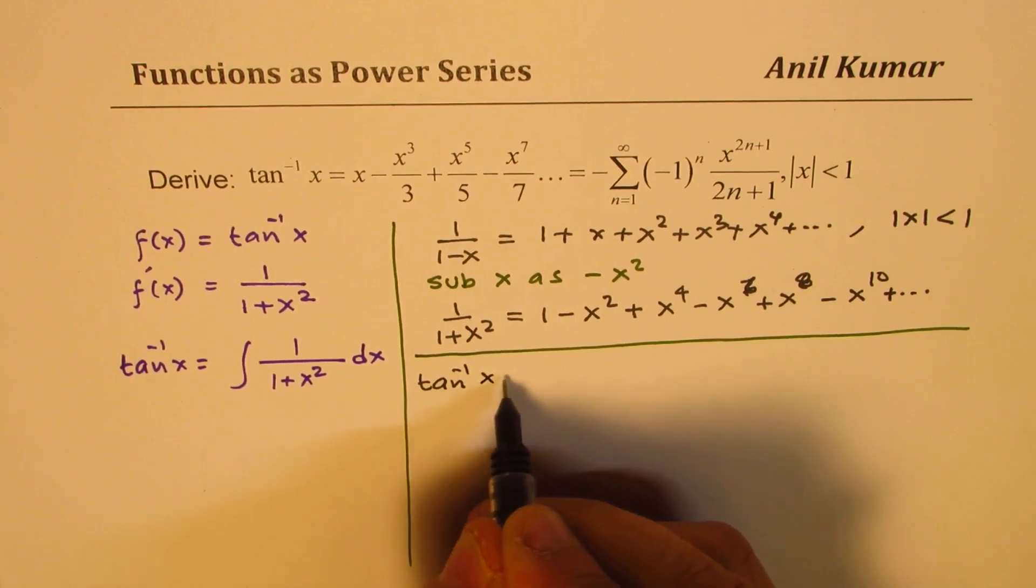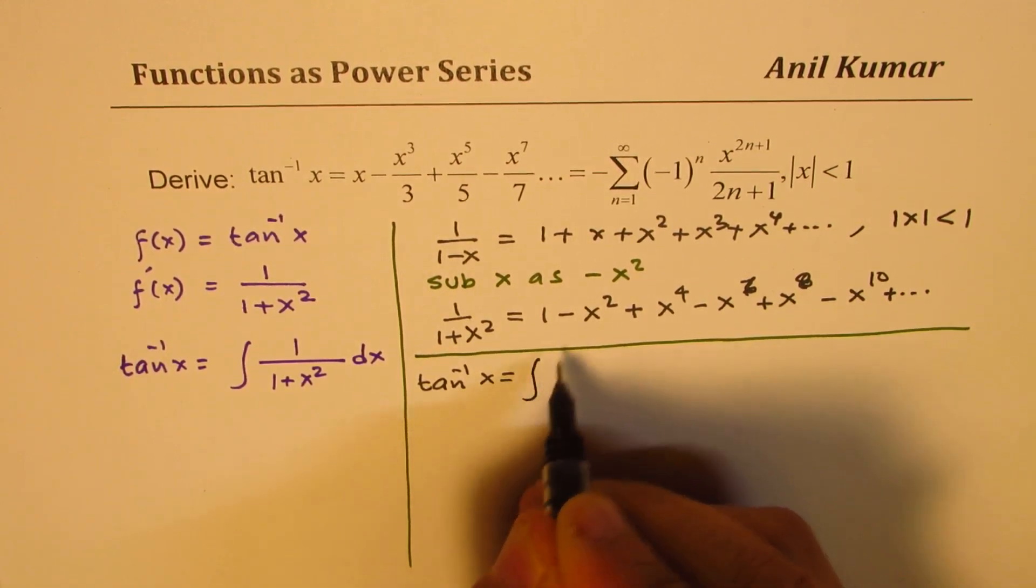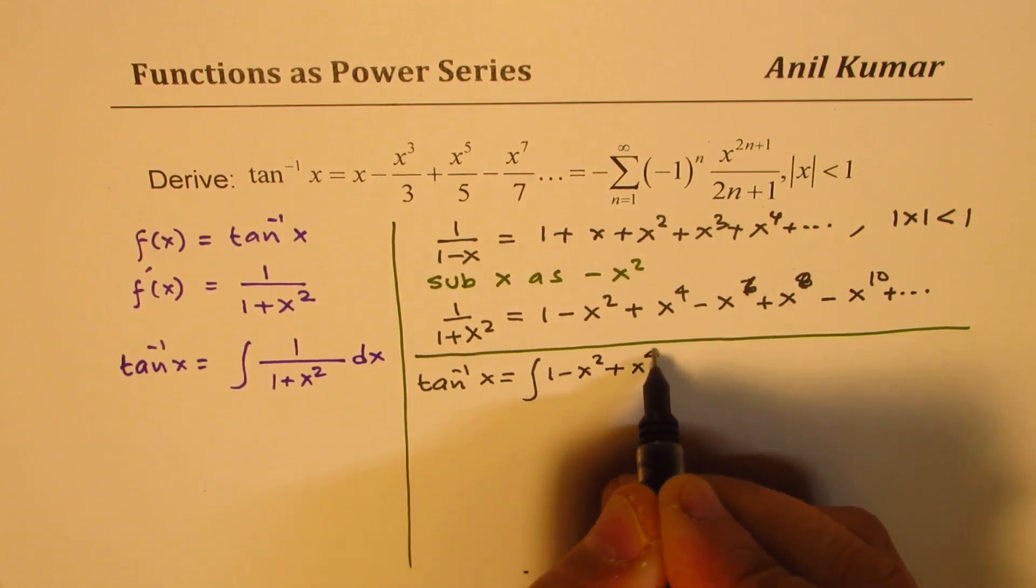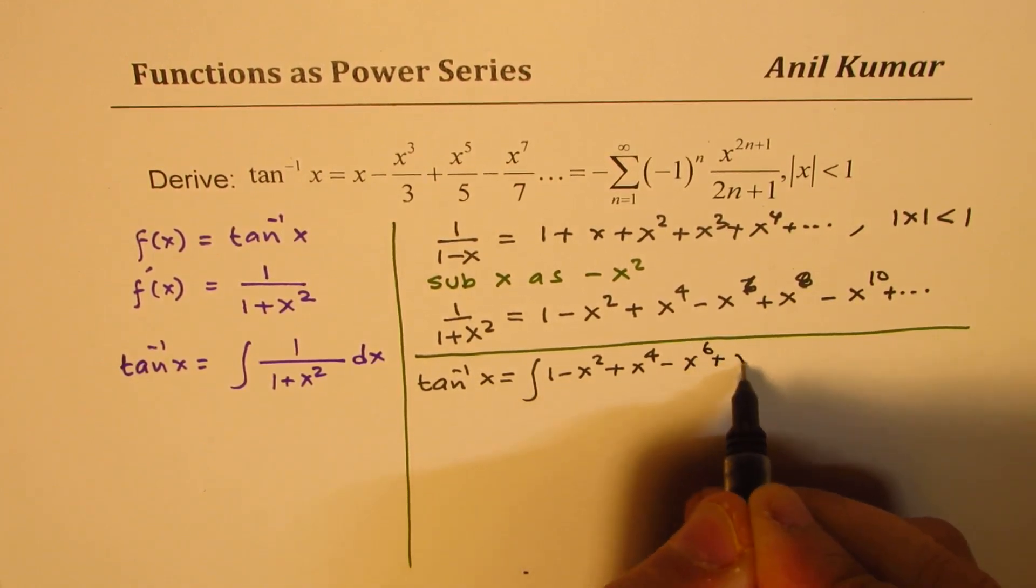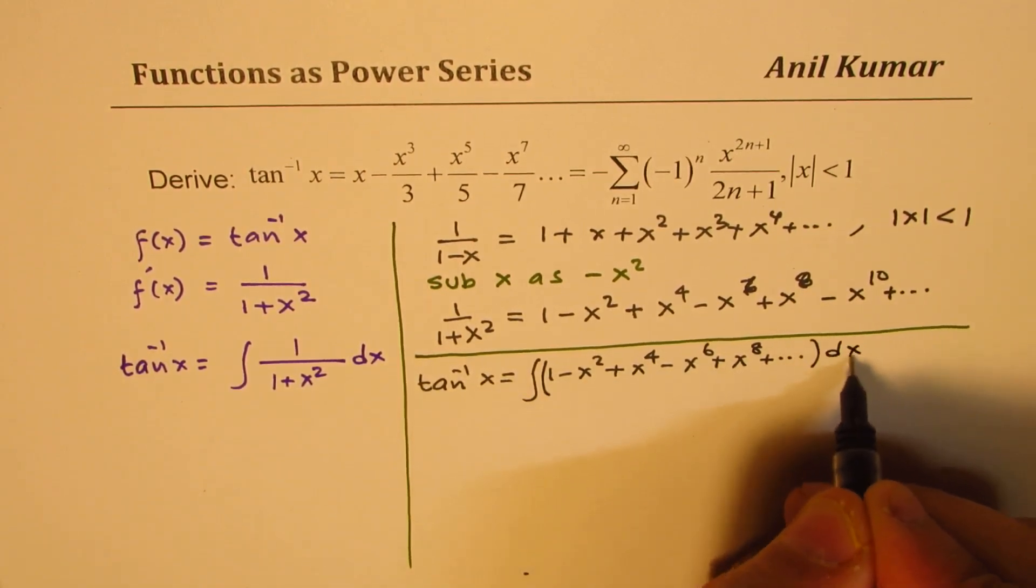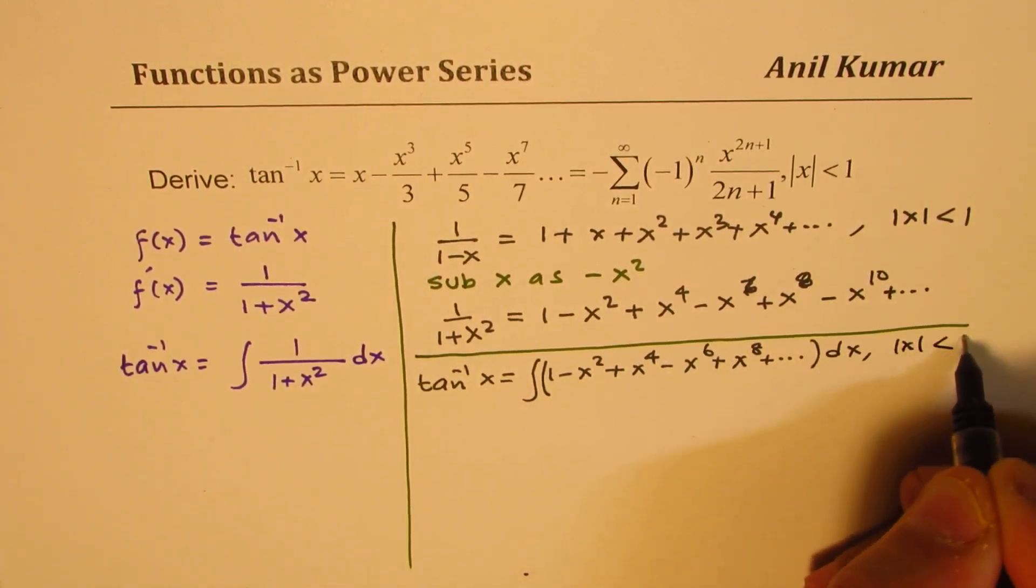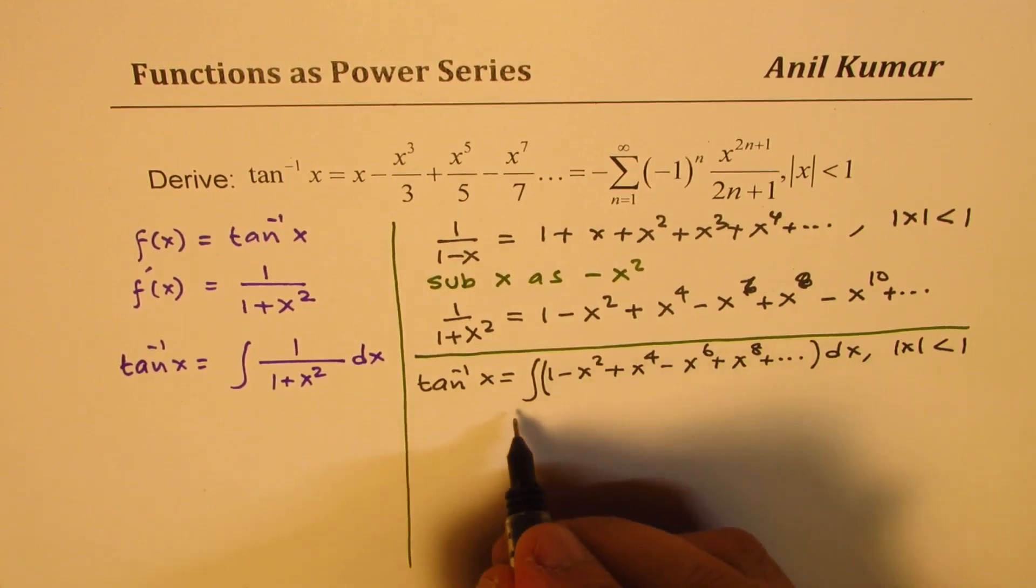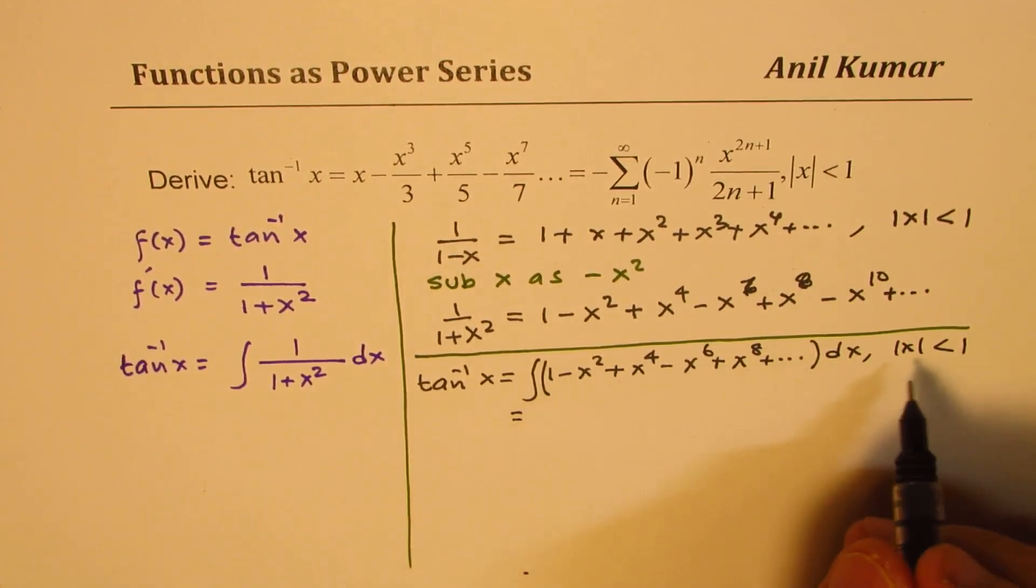So you now understand where we are heading. We can write now tan inverse x equal to integral of all this, which is one minus x squared plus x to the power of four minus x to the power of six plus x to the power of eight and so on, dx, where absolute value of x is less than one.